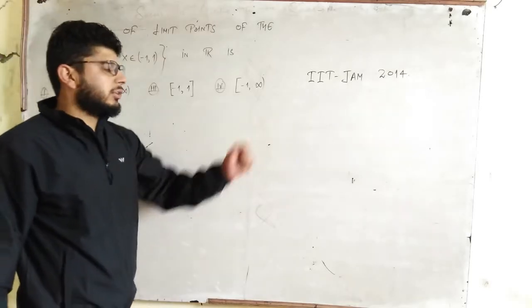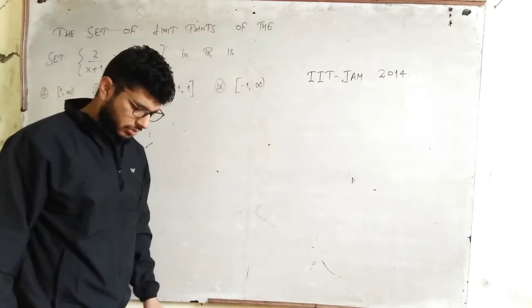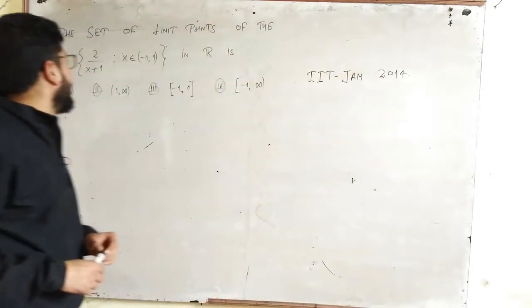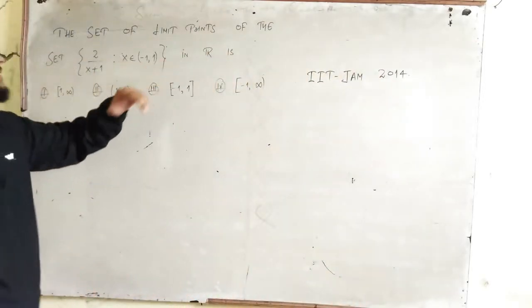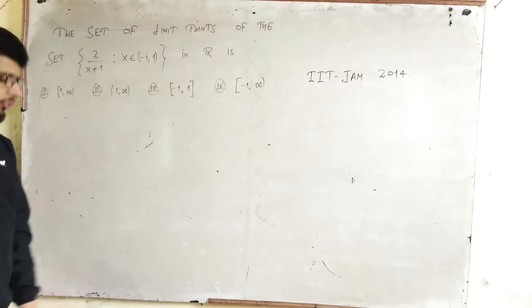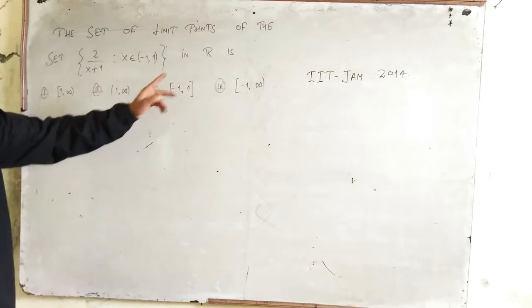This is from IIT JAM 2014, question number 14. The question asks: the set of limit points of the set {2/(x+1) : x belongs to open interval (-1,1)} in R is...